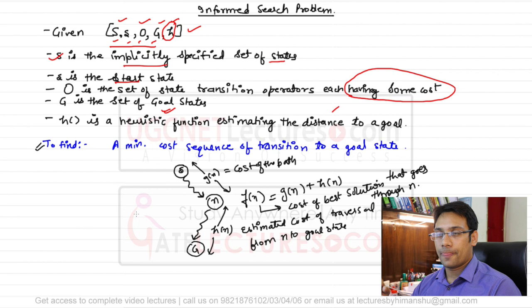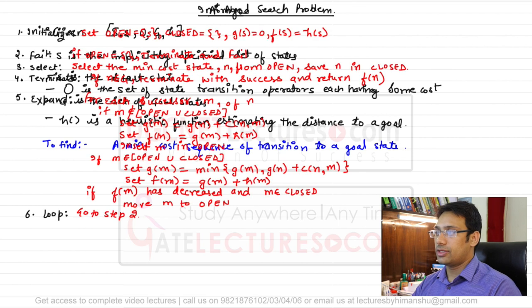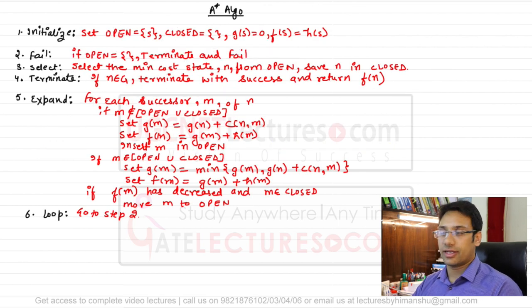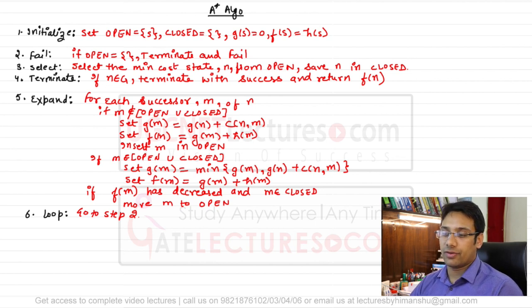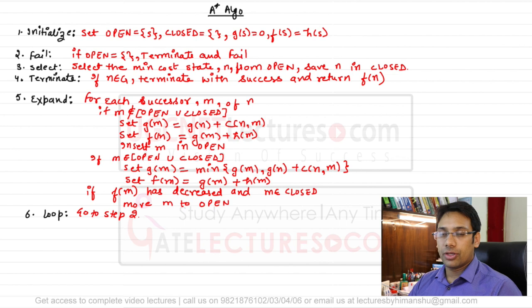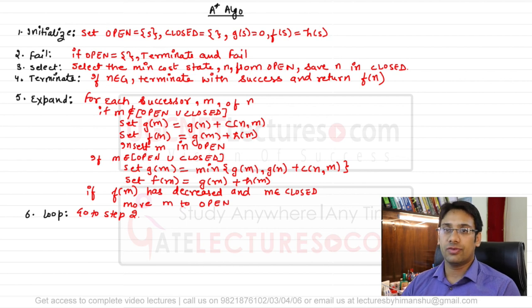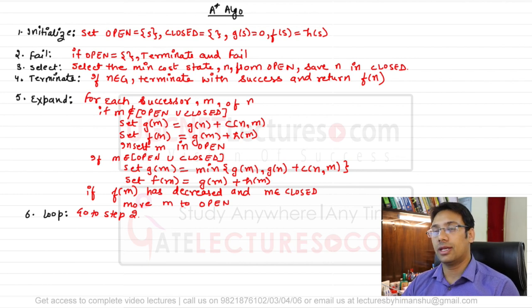Based on the informed search problem, we introduce the A* algorithm. The A* algorithm is not practically implementable — it is a theoretical implementation. The practical version is the best-first search, which is a simplified version of A*. There is a very small difference between A* and best-first search. We will also look at the A-O* algorithm, best-first search, steepest hill climbing, and hill climbing algorithms one by one.